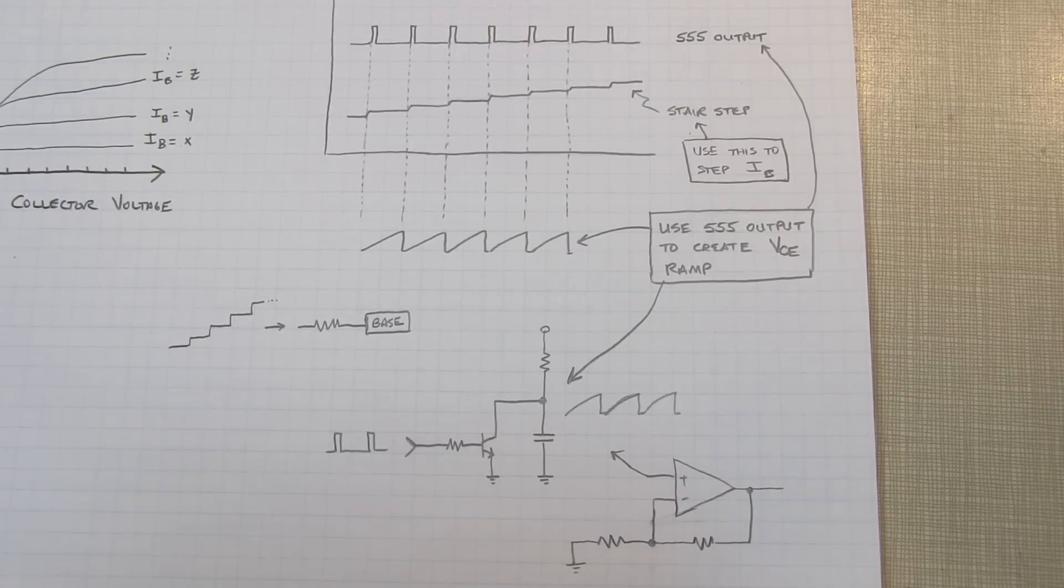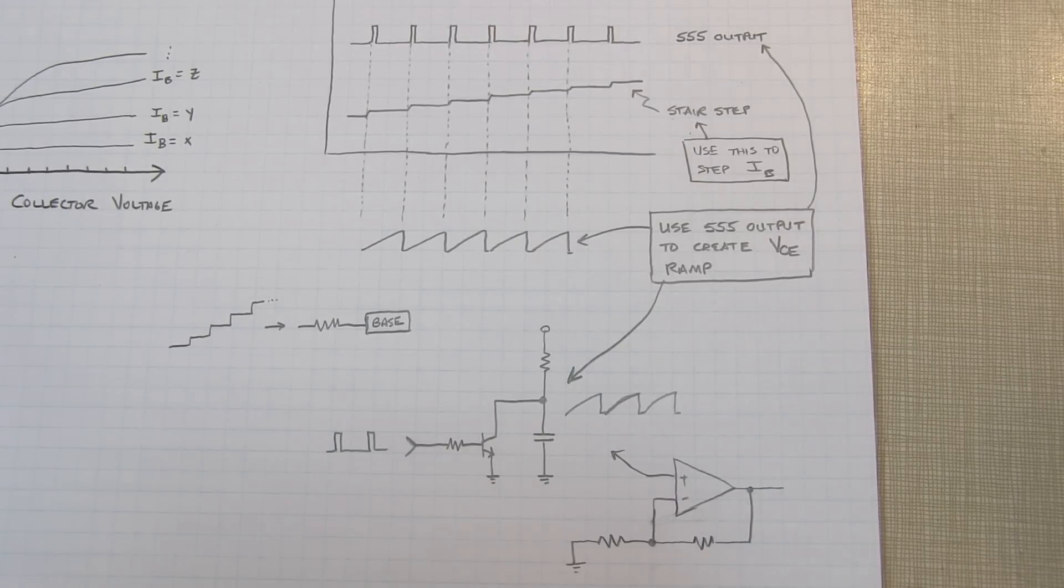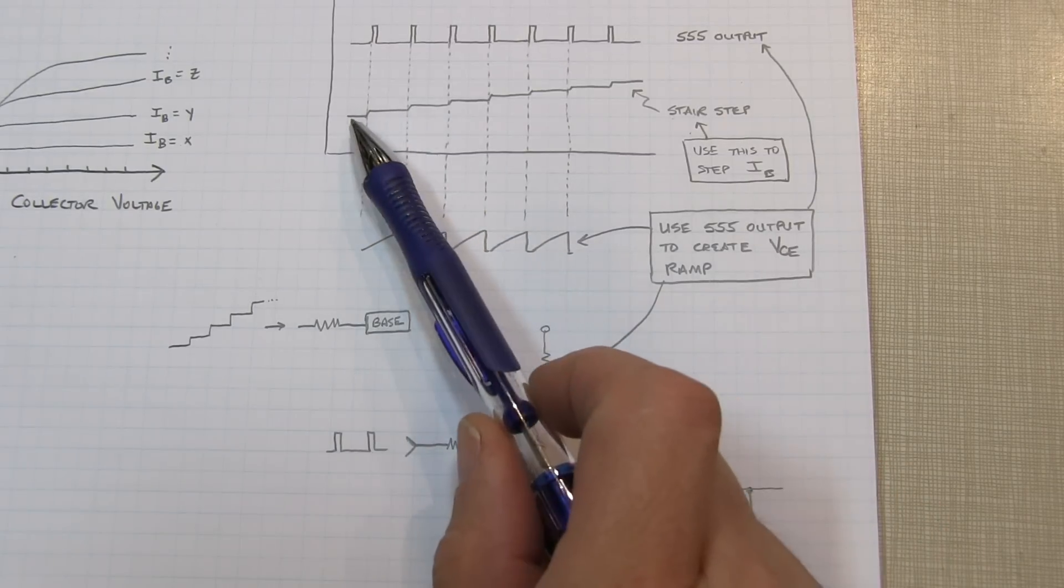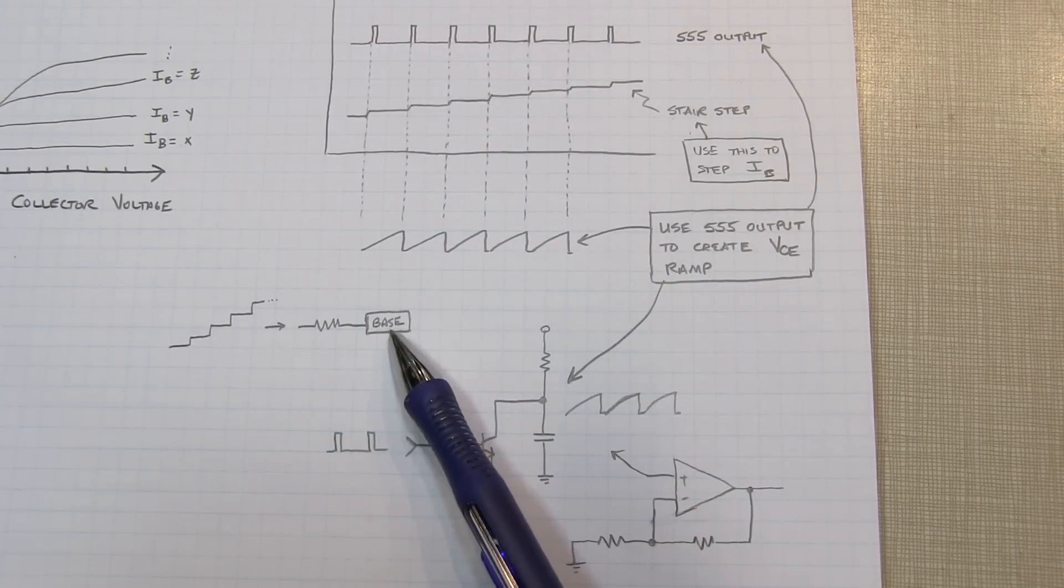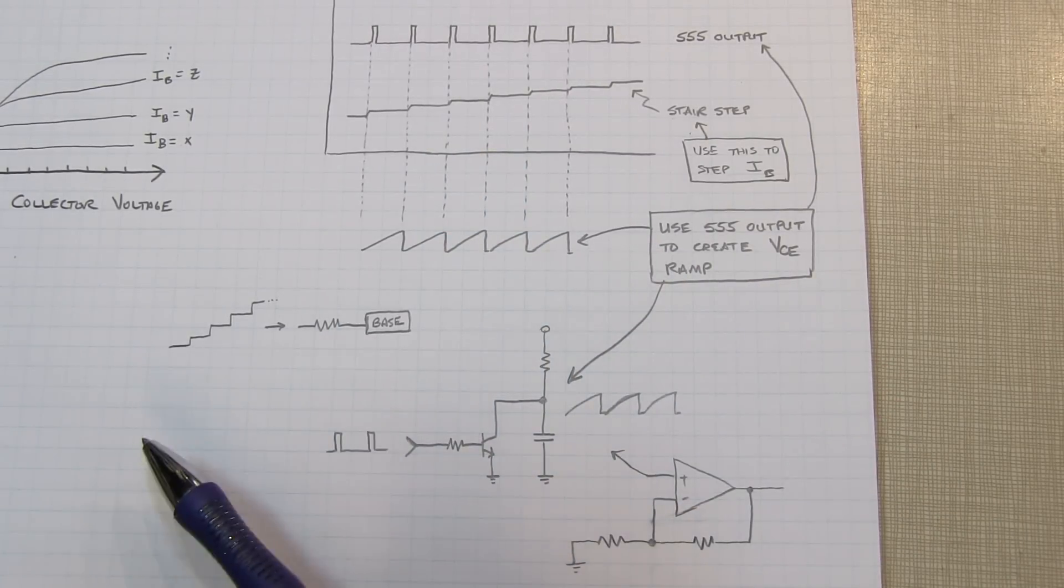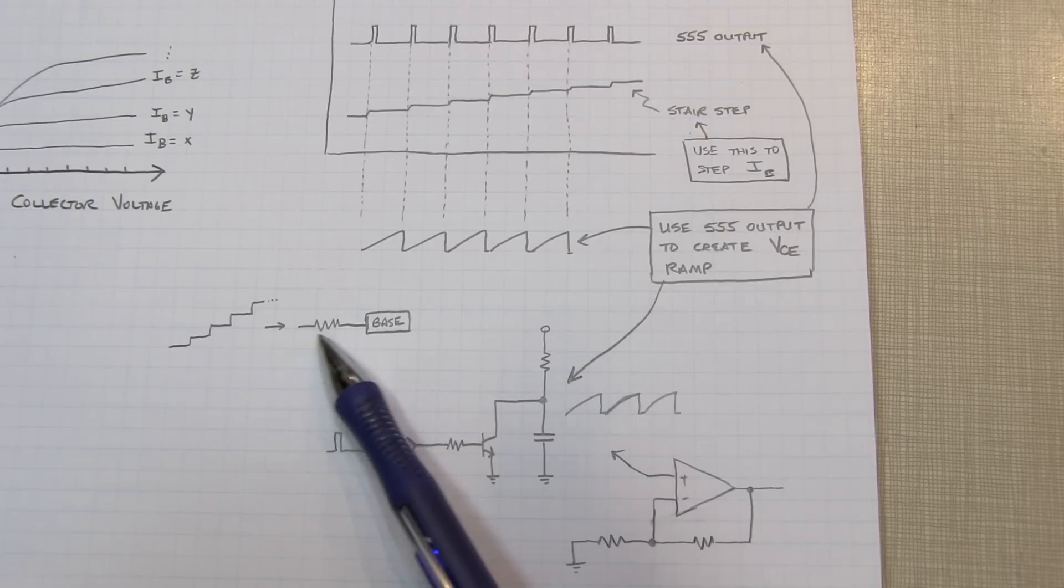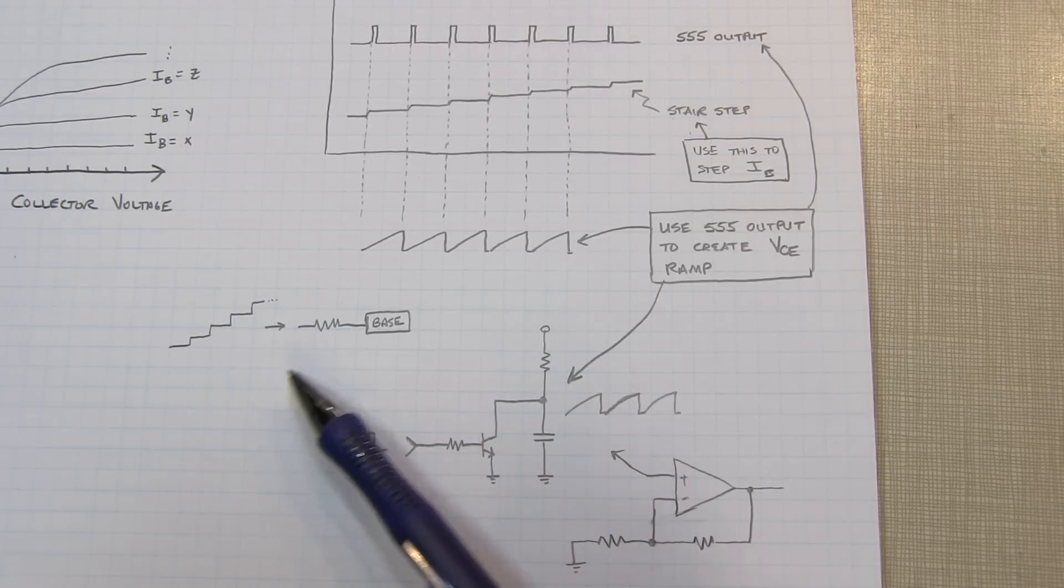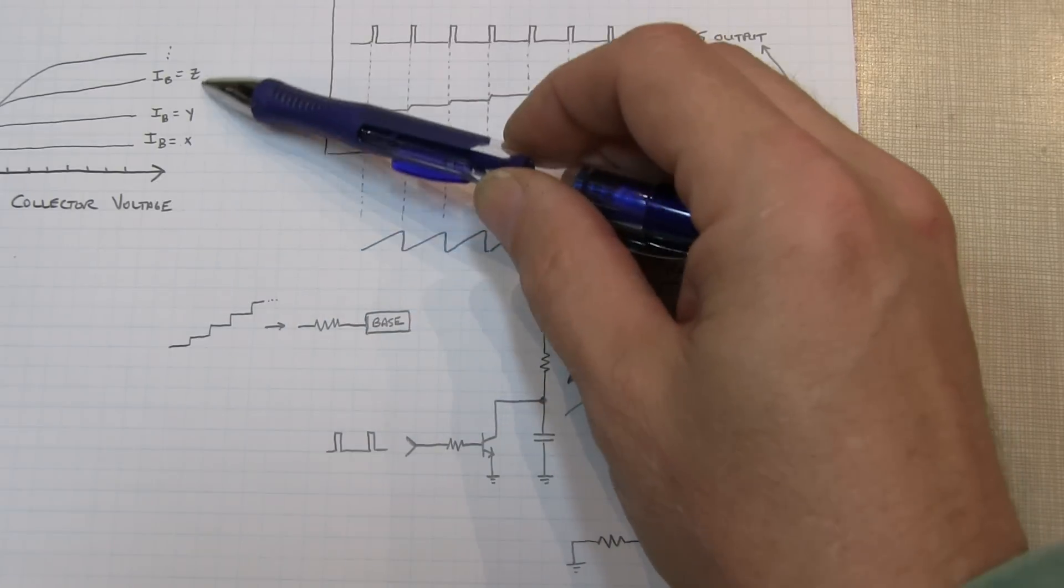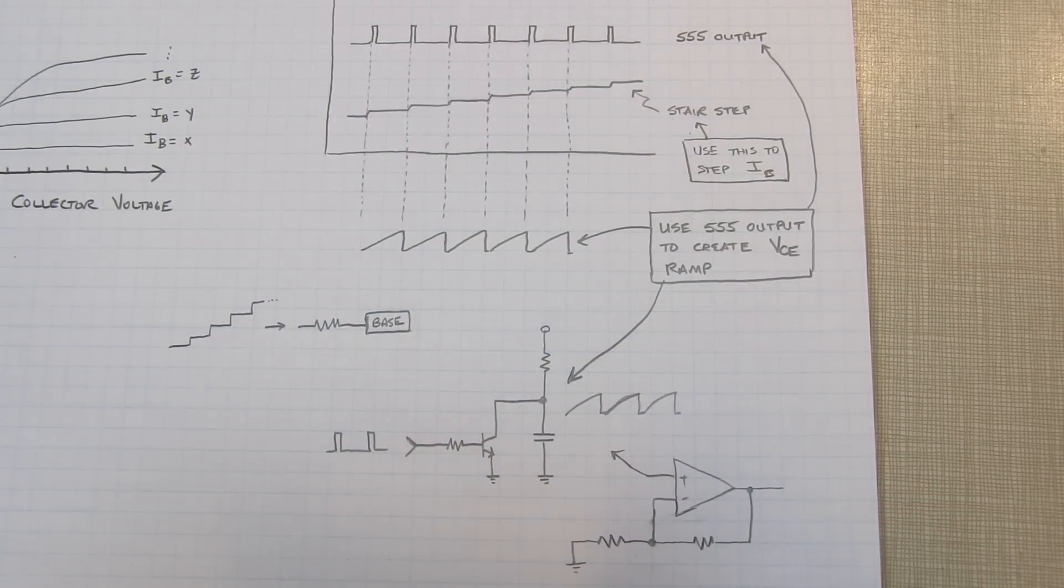Now the approach here is pretty minimalist, so the responses are not going to be perfect, but they're certainly adequate to get a decent response. The first thing we'll do is take this stair step voltage and apply it to the base of the transistor under test through a resistor. We'll make this resistor relatively large, so it kind of looks a bit more like a current source.